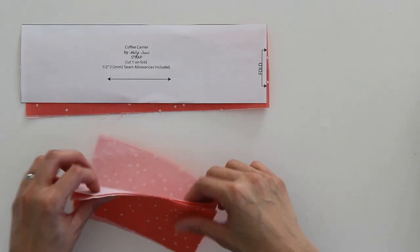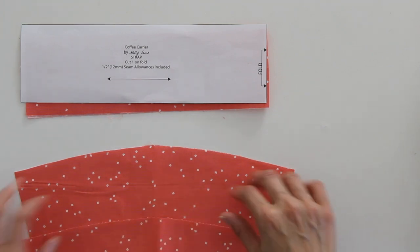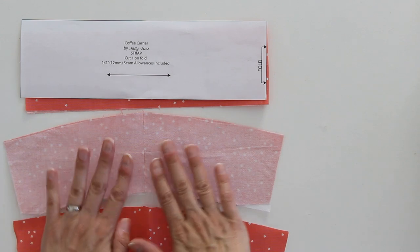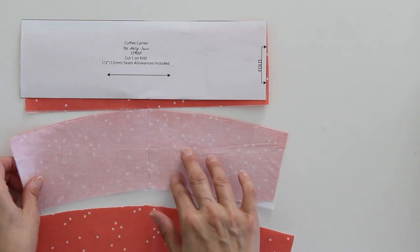For the carrier sleeve you need to cut two pieces on the fold so they will look like this when they are unfolded. On one of them I've gone ahead and fused lightweight fusible interfacing to the wrong side.